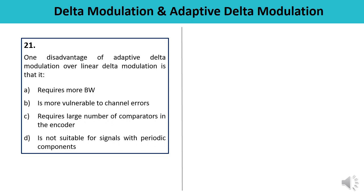Question 21: One disadvantage of Adaptive Delta Modulation over linear Delta Modulation is — it requires more bandwidth, it is more vulnerable to channel errors, it requires a large number of comparators in the encoder, or it is not suitable for signals with periodic components? The disadvantage of Adaptive Delta Modulation is that it requires a large number of comparators in the encoder. This is the major drawback.